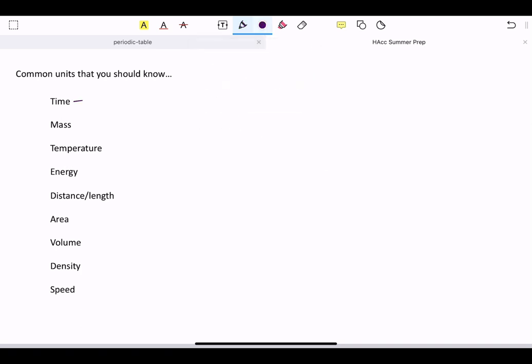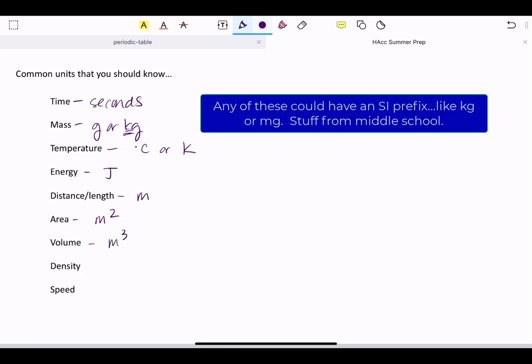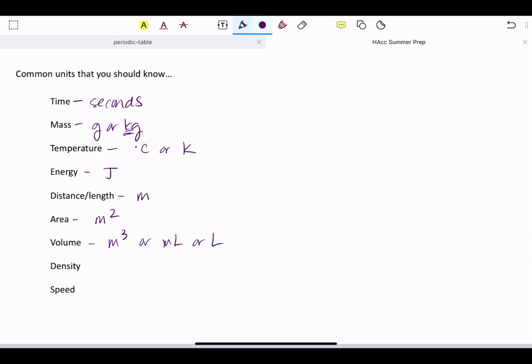Common units that you should know that you have picked up somewhere in middle school or biology - these are units I expect you to know. Time is measured in seconds. Mass, common unit would be grams or kilograms. You guys learned some of the basic SI prefixes in middle school, so you should be comfortable converting between some of those. Temperature units would be degrees Celsius or Kelvin. Energy would be joules. Distance or length would be meters. Area: meters squared. Volume: meters cubed or milliliters or liters. Density: grams per milliliter or grams per centimeter cubed. We'll clean that up later in chemistry. We will use density a whole lot. Speed: meters per second, or any distance per unit time.